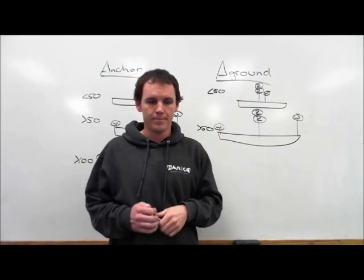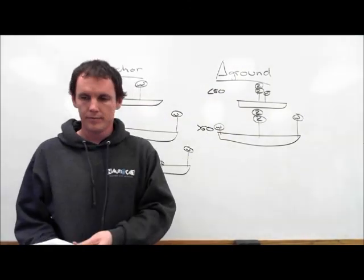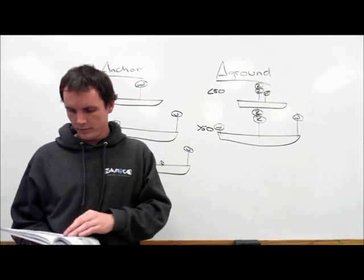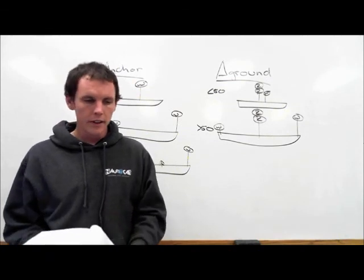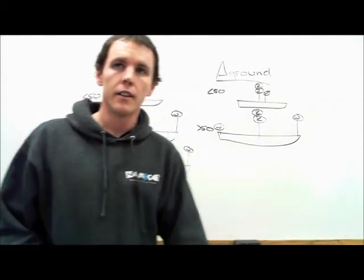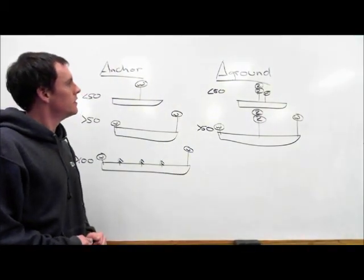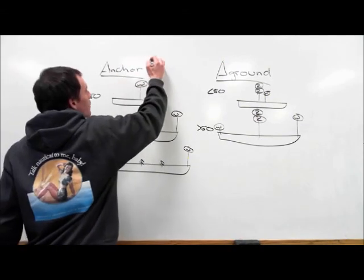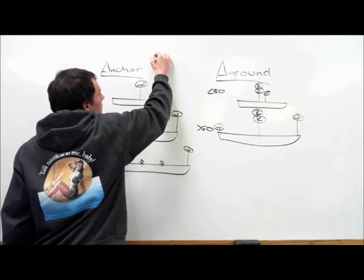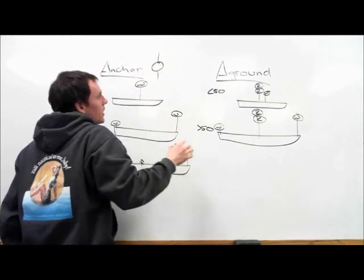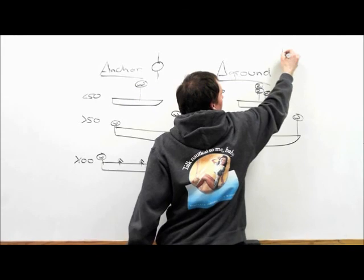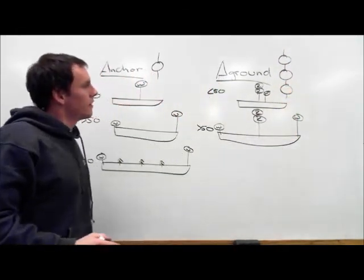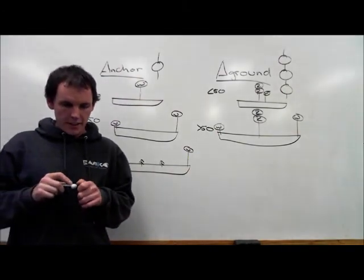And let's look at one more thing before we leave this topic. What's the day shape for a vessel at anchor? Ball. One ball. Day shape for a vessel aground? Two balls. Three. Three balls. Good.